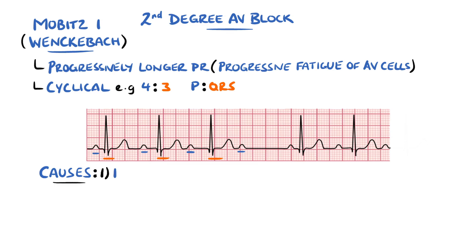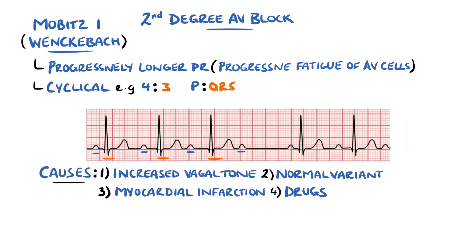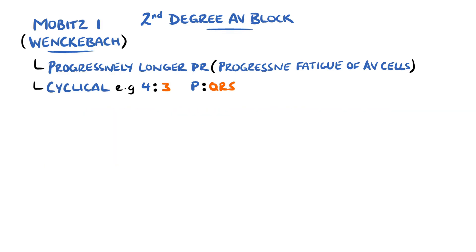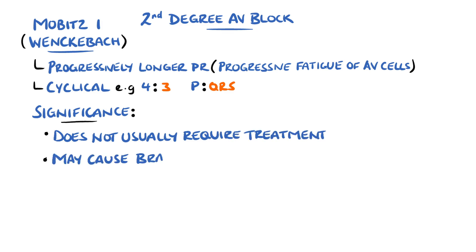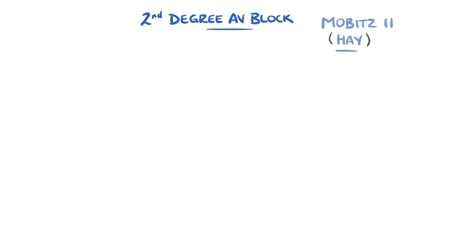Causes of Mobitz I, or the Wenckebach phenomenon, again include high vagal tone, and it can again be a normal variant. But it can also come from inferior myocardial ischemia, atrioventricular nodal blocking agents, mitral valve surgery, and hyperkalemia. Often treatment is not necessary, but in some instances it can cause bradycardia and hypotension, in which case atropine is used. AV blocking medications should also be reduced to the minimum required dose, and if atropine is not effective, then pacing may be required.